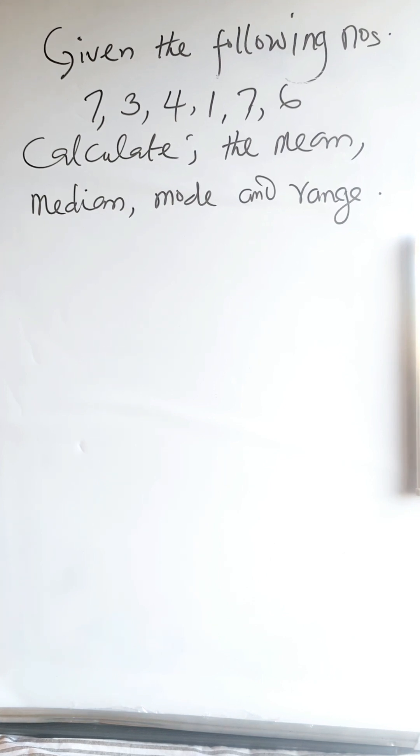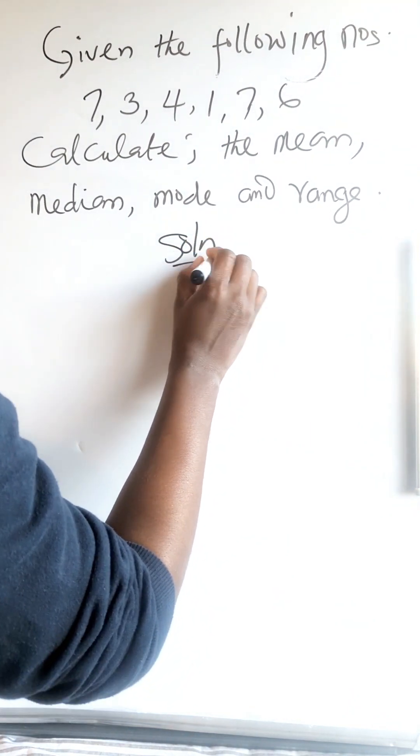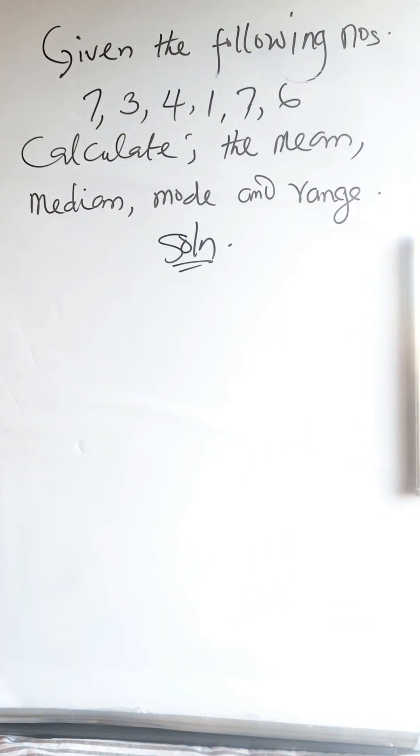We are going to statistics now. This is very simple. Solution: The first thing you do is to arrange the numbers either in ascending order or descending order. So let's arrange in ascending order, that is in increasing order.